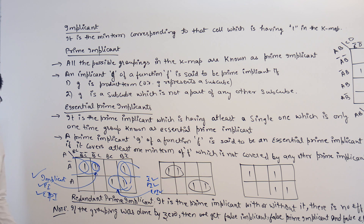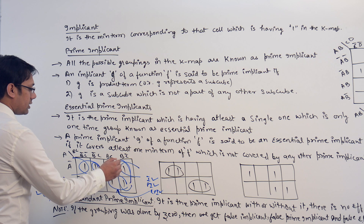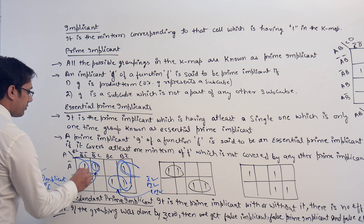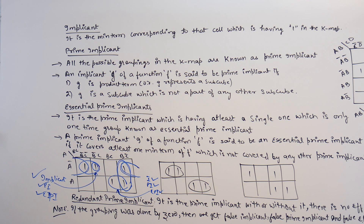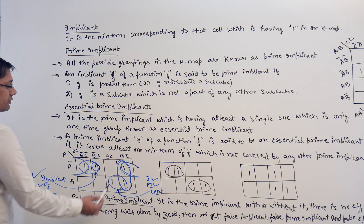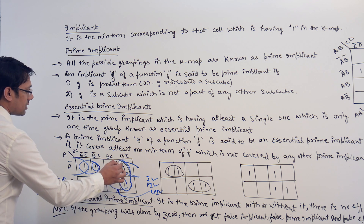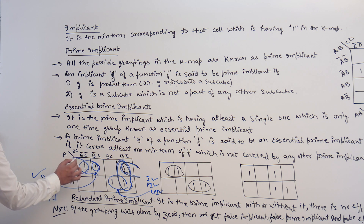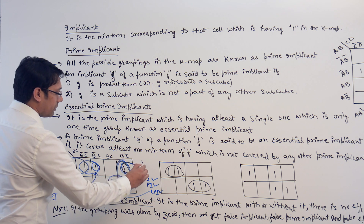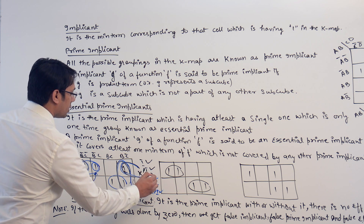It is an essential prime implicant because it is covering at least one '1' which is not covered by any other subcube. But if you take this subcube and this subcube, they are not covering at least one '1' which is not covered by any other subcube. The ones in those subcubes are already covered by the other subcubes. So those subcubes are implicants and prime implicants, but they are not essential prime implicants.